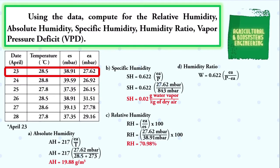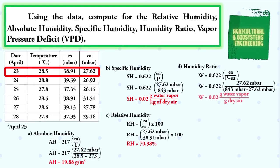Next, we solve for the humidity ratio. Using the formula W = 0.622 × ea / (P − ea), we substitute: W = 0.622 × 27.62 millibars / (843 millibars − 27.62 millibars). We simply solve, giving us a final value for our humidity ratio of 0.02 grams of water vapor per grams of dry air.